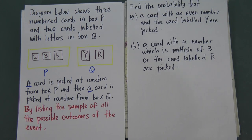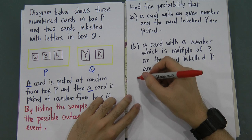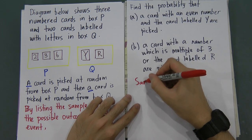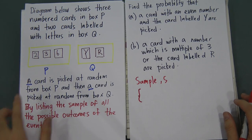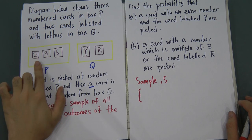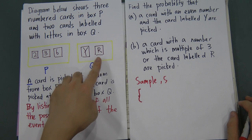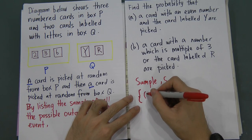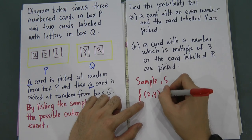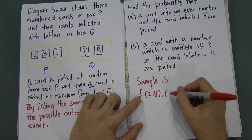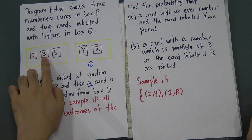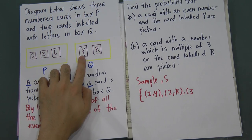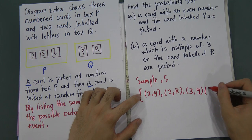He asks you to list the sample of all the possible outcomes of the event. Before you start to answer parts A and B, you have to list out all the possible outcomes first. So when I pick card number 2 from Box P, I can pick Y or I can pick R from Box Q. So for the first group: if I pick number 2, I can pick Y — giving 2Y. And if I pick number 2, I can pick R — giving 2R. Then if I pick number 3 from Box P, I can pick Y — giving 3Y — and I can pick R — giving 3R.